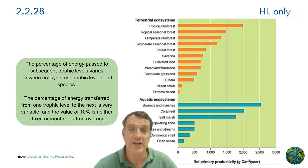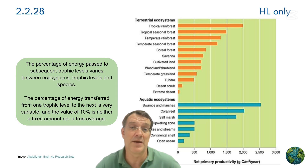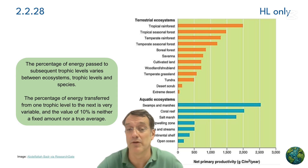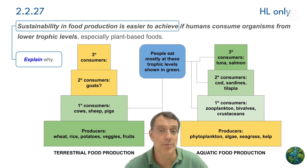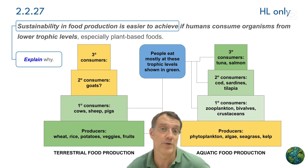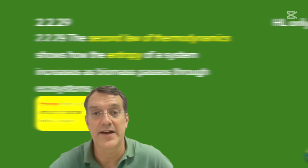When we understand these efficiency rates, that helps us evaluate the environmental impact of different food production methods and make more ethical choices about resource use.